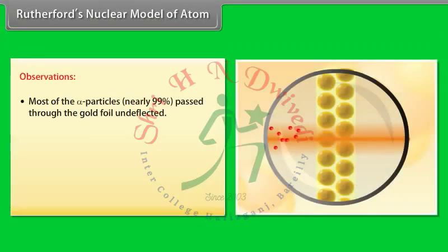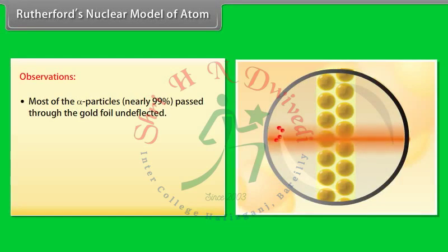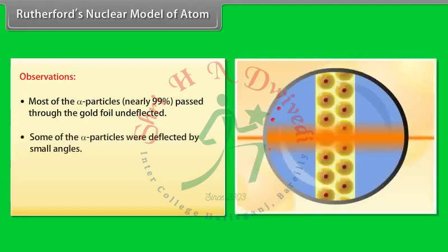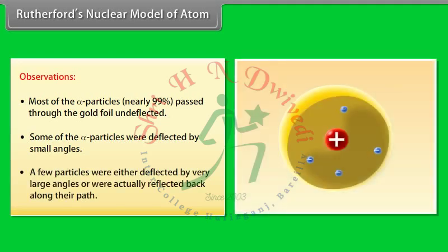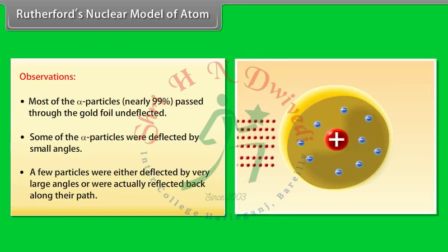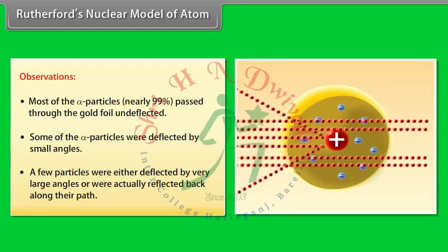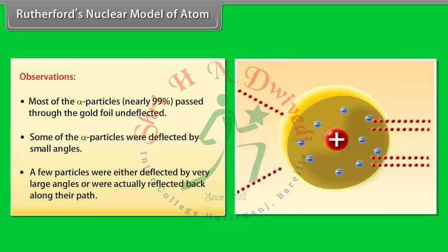Observations: 1. Most of the alpha particles — nearly 99% — passed through the gold foil undeflected. 2. Some of the alpha particles were deflected by small angles. 3. A few particles were either deflected by very large angles or were actually reflected back along their path.